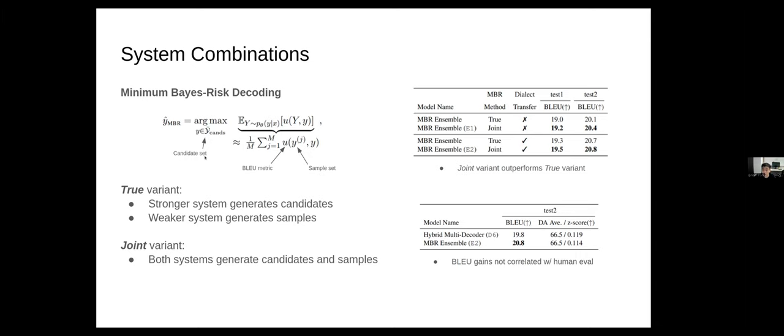We tried two different variants in this work. One is called the true variant, where we have a stronger system generating the candidate set and a weaker system generating the sample set for which we use to measure the BLEU metric. In other words, we use the sample set as the references. We also apply a joint variant, which means that we use both systems to generate both the candidates and samples.